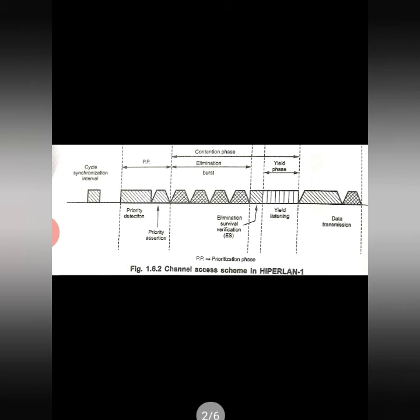The contending node sends the elimination burst according to probabilities. The probability of elimination P(n) varies from 0 to 12, as the length of individual elimination bursts is 0 to 12. The contention node then listens to the medium during elimination survival verification.